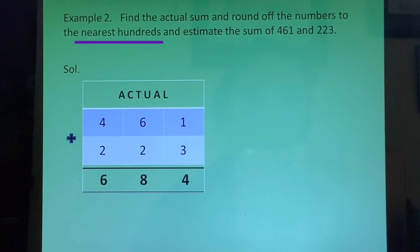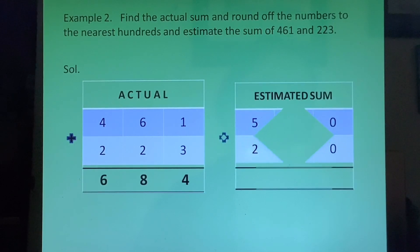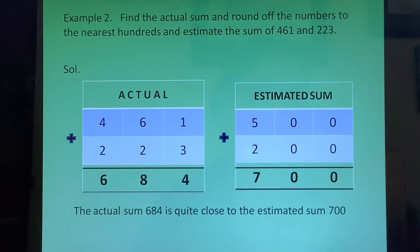Now we have to round off the digits. And rounding off we have to do to the nearest hundreds. So we look at the tens place. Tens place we have 6 in the first number. So 6 is greater than 5. Therefore 461 will become 500. And in the second number in tens place we have 2. 2 is less than 5. So 223 will become 200. So we get 500 plus 200 which is 700. And then we will write the actual sum 684 is quite close to the estimated sum 700.